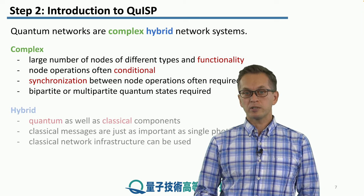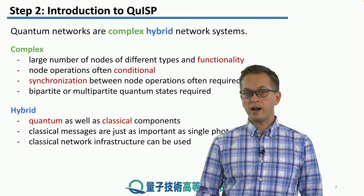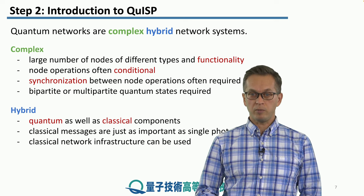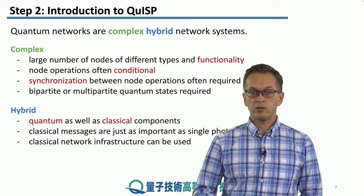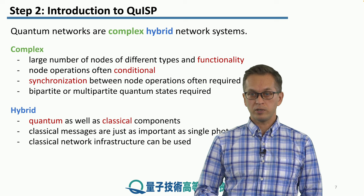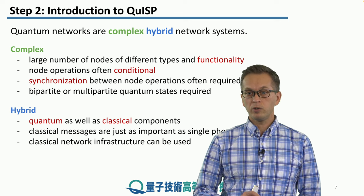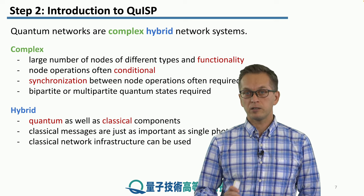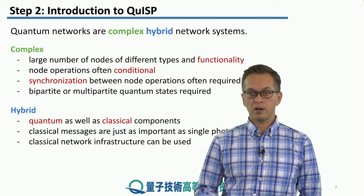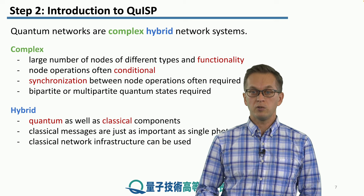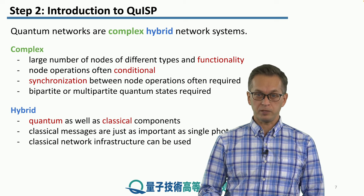Quantum networks are hybrid because quantum networks don't exist in a bubble. We are actually relying on classical components as well and the classical infrastructure. We're not only sending single qubits representing our quantum information. We have to also communicate classically between the networks using classical bits of information.